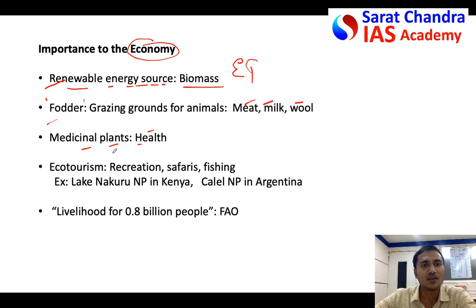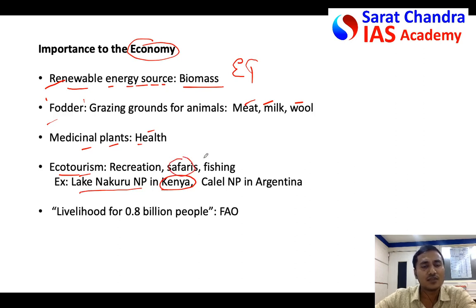Grasslands are also famous ecotourism places. For example, in the Savannah grasslands, Lake Nakuru is a famous national park in Kenya that generates a lot of revenue from safaris. Even grasslands are famous for fishing, recreation, and hiking. In Argentina, the temperate Pampas grasslands have a famous national park called Calel, so it creates a lot of revenue for the country.